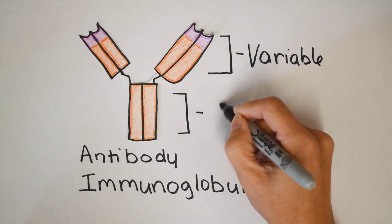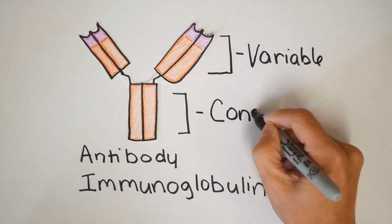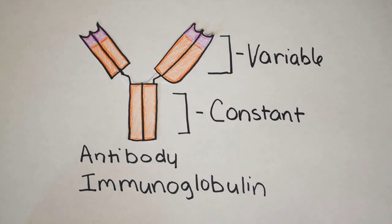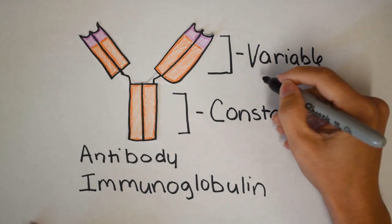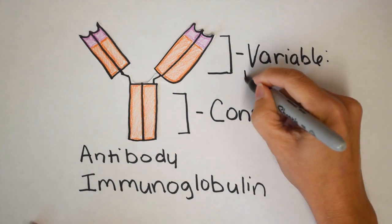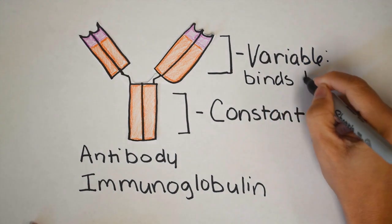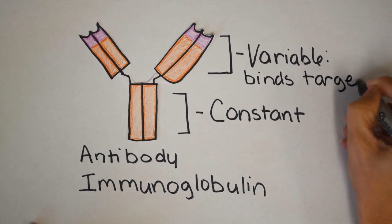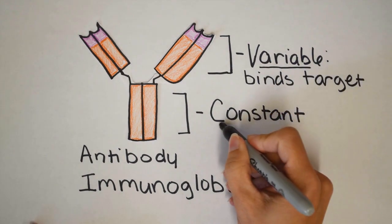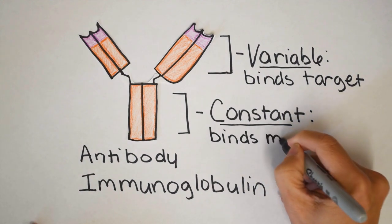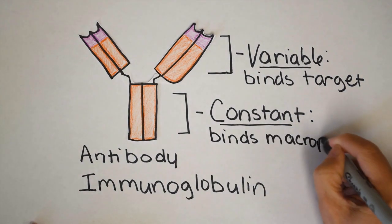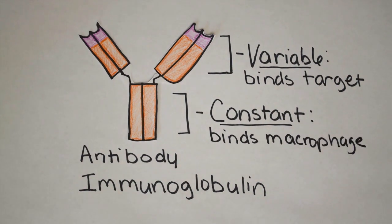You could have multiple different variable regions that all bind to one bacteria or one virus. The other part is the constant region. So if I was to give you antibodies, the constant region of mine would be incredibly similar to the constant region of your antibody. The variable region binds to the target antigen, whereas the constant region binds to the immune cell — typically an immune cell like a macrophage. If you've watched some of my other videos, you're probably familiar with what a macrophage is. It's an innate immune cell that engulfs and breaks down pathogens.